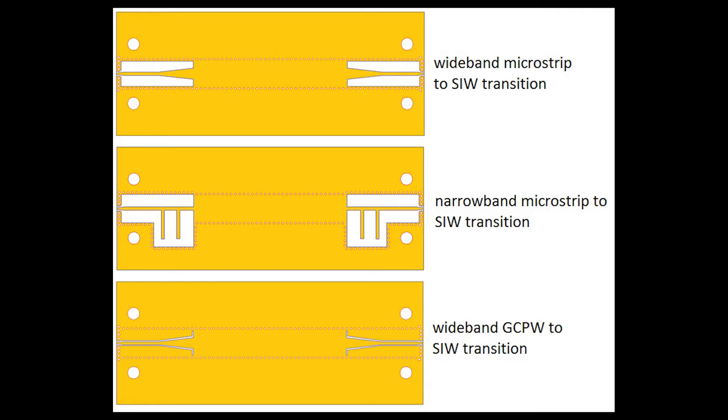And then finally, the bottom structure is a grounded coplanar transition to SIW. In my opinion, that's probably the best one to use at millimeter wave frequencies. It's a little more difficult to characterize in the design phase, and there are a few concerns in the fabrication aspects. But again, this probably has the best performance at the high frequency millimeter wave frequencies.